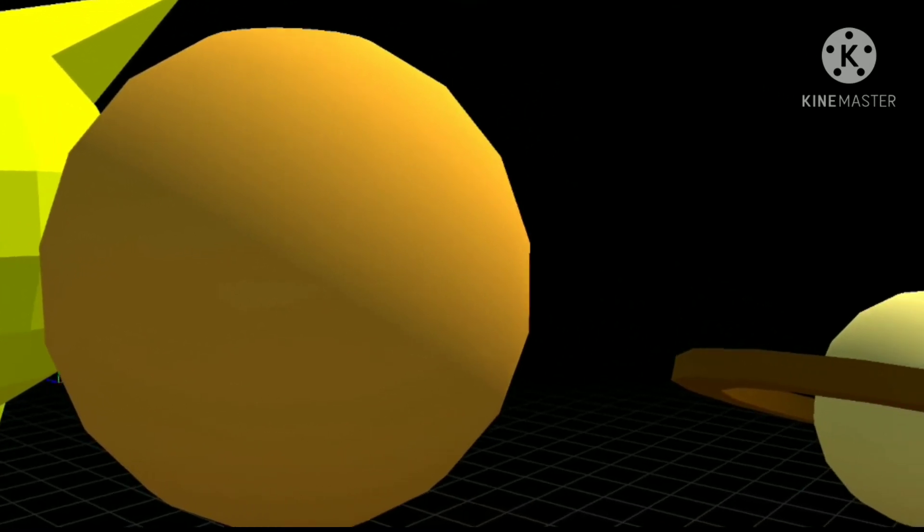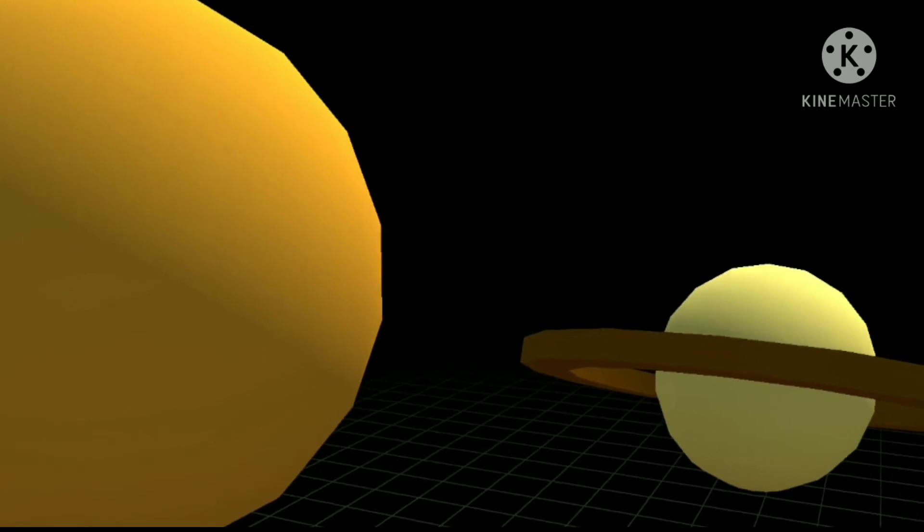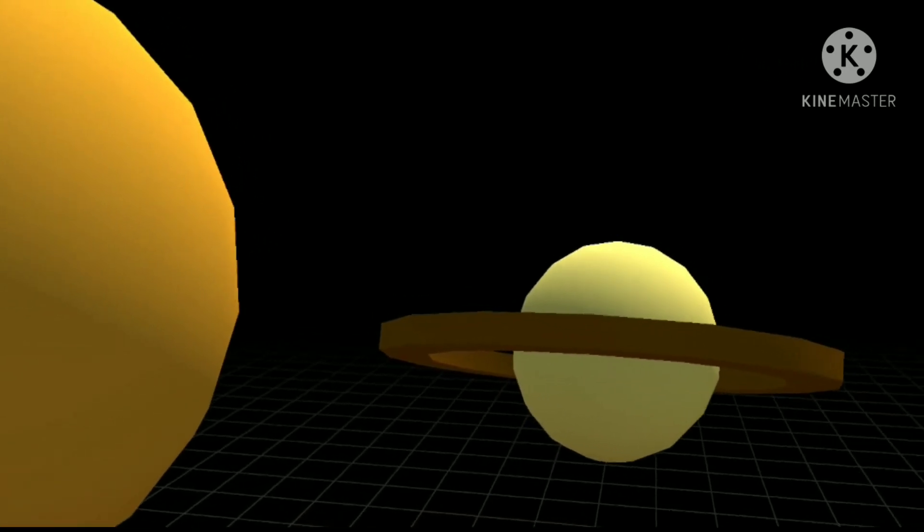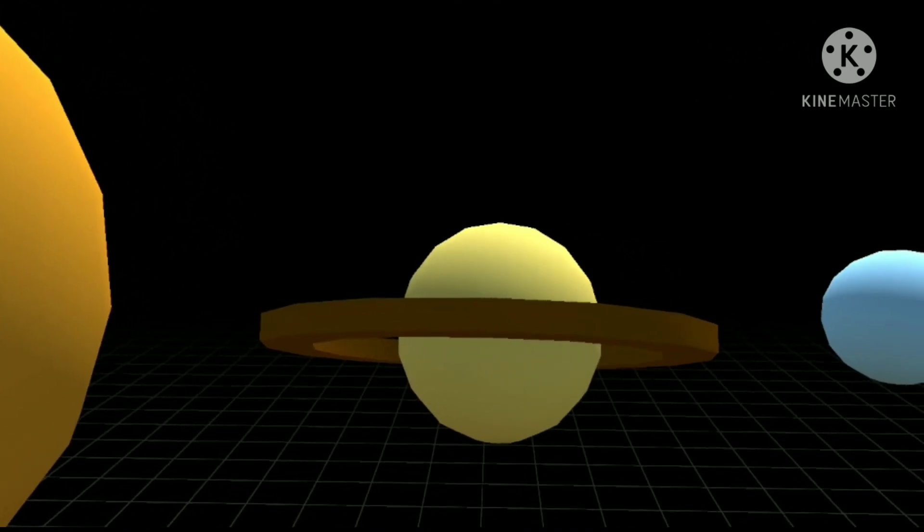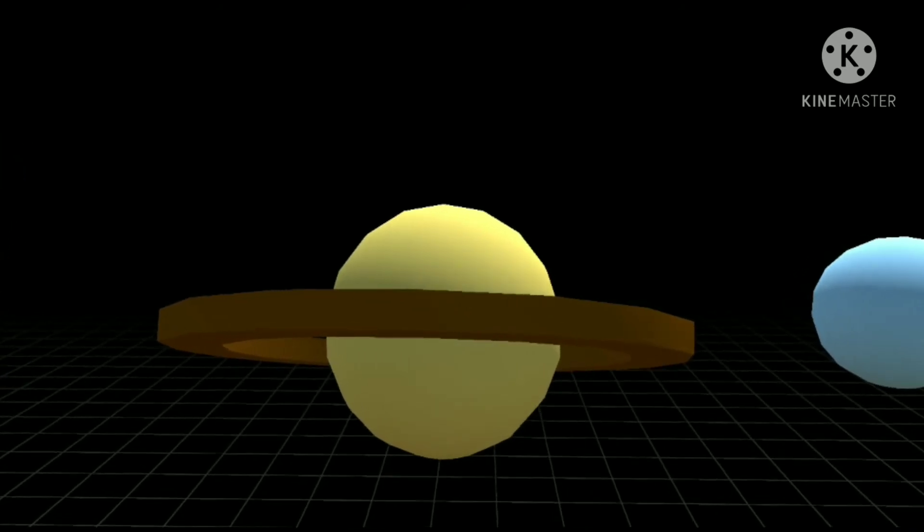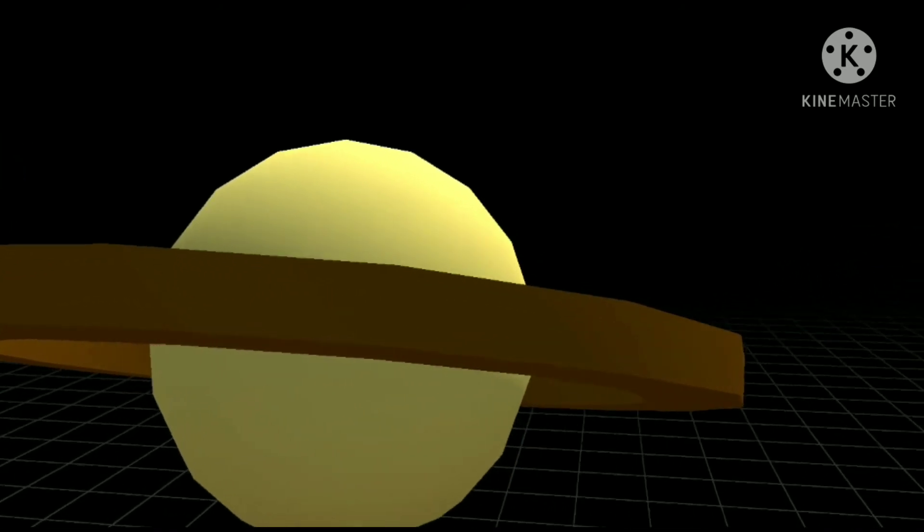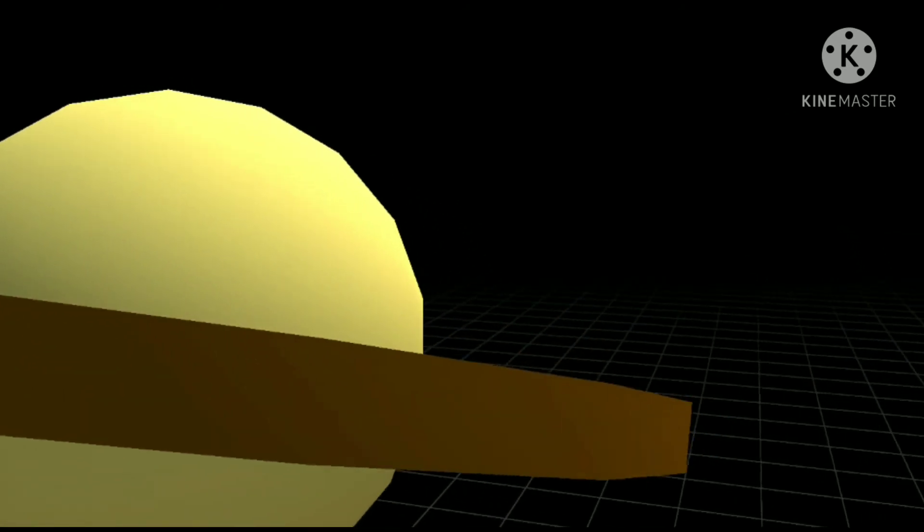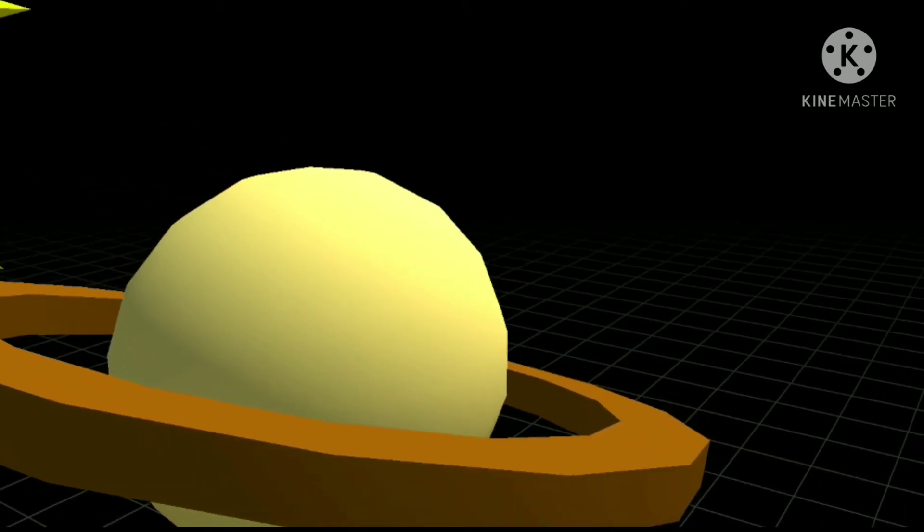Next up is Saturn. From far away, it looks like it has rings. When in actuality, it's all ice, moon, and rock. Saturn is the second gas giant. Maybe Saturn got engaged.